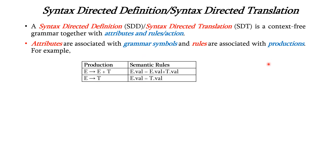For example, we have two productions: E tends to E plus T and E tends to T. The associated semantic rules are E dot val equals E dot val plus T dot val, and E dot val equals T dot val. Here val is the attribute associated with the grammar symbols E and T. The first rule performs addition and stores the result in E dot val, and the second rule assigns the value of T to E.